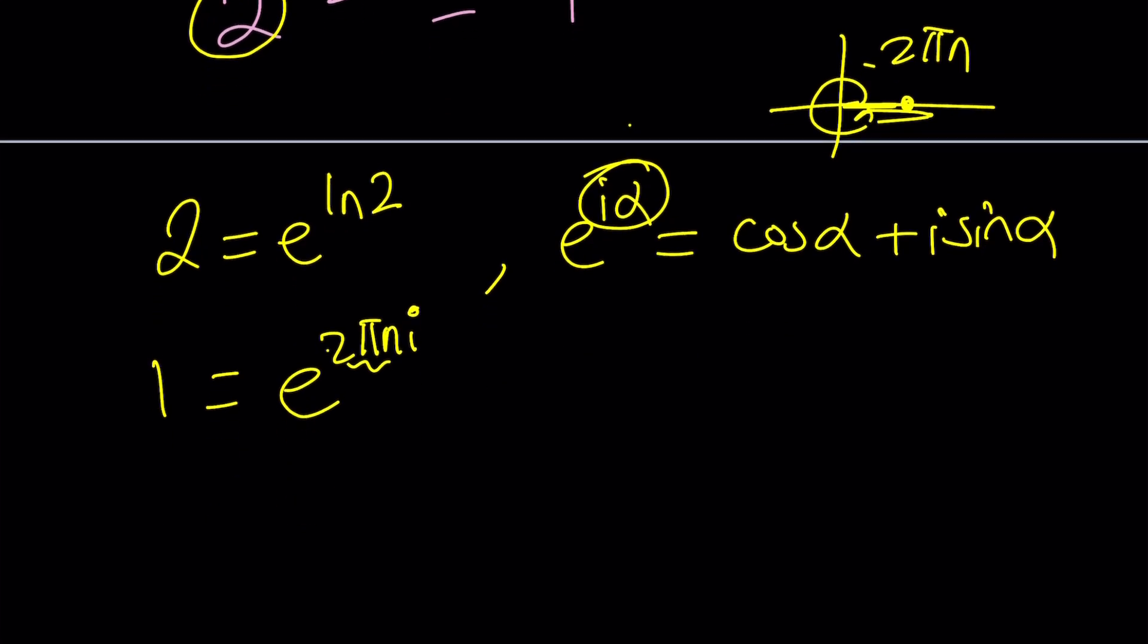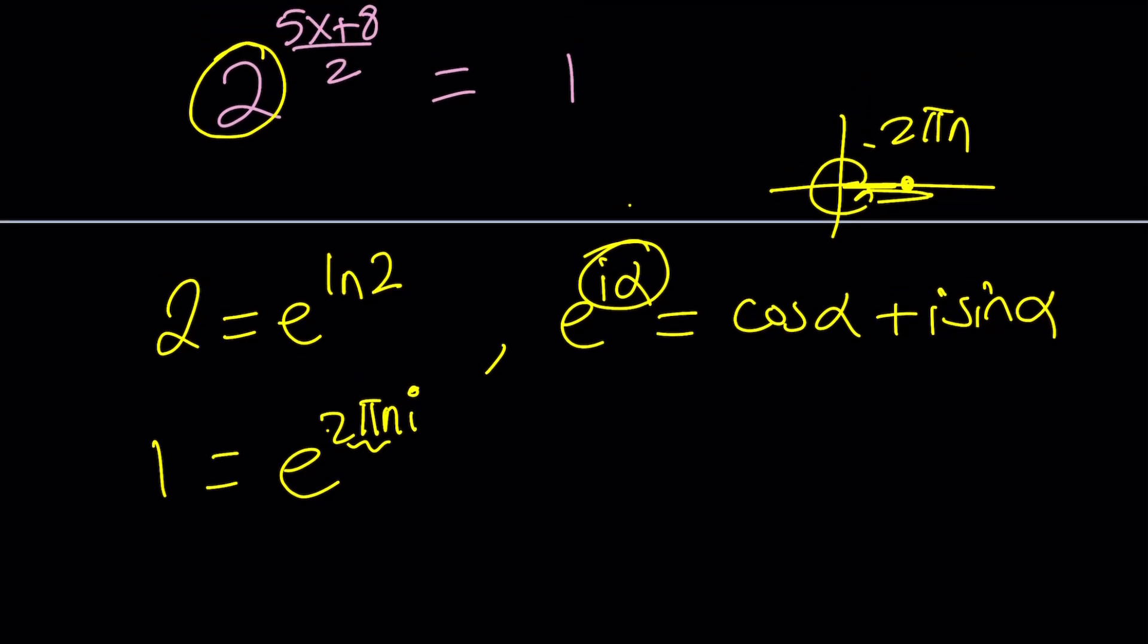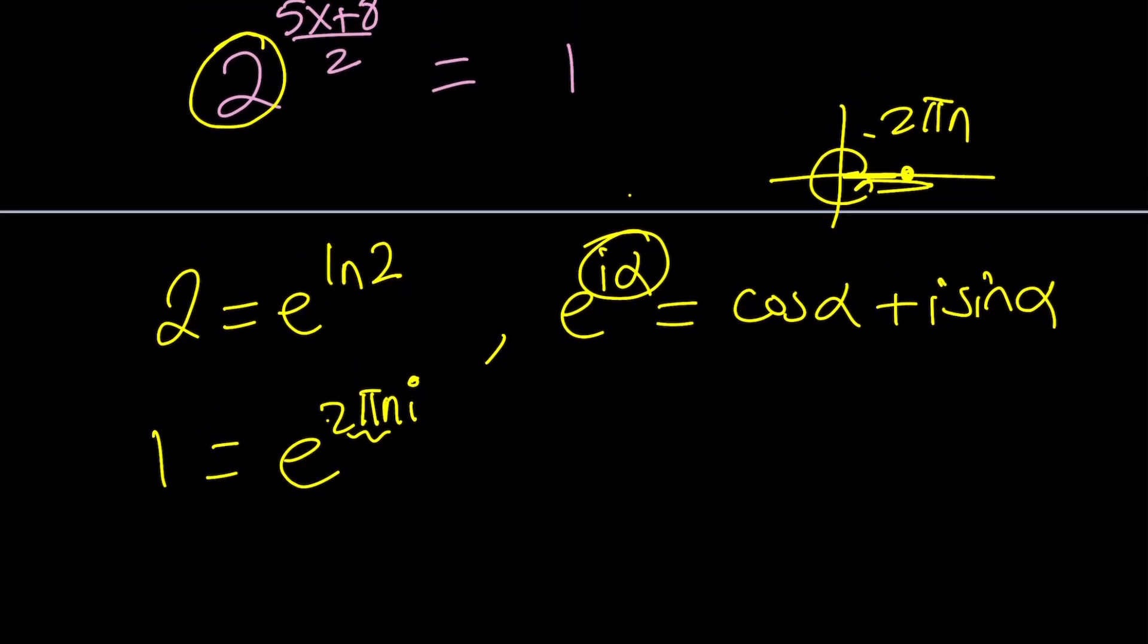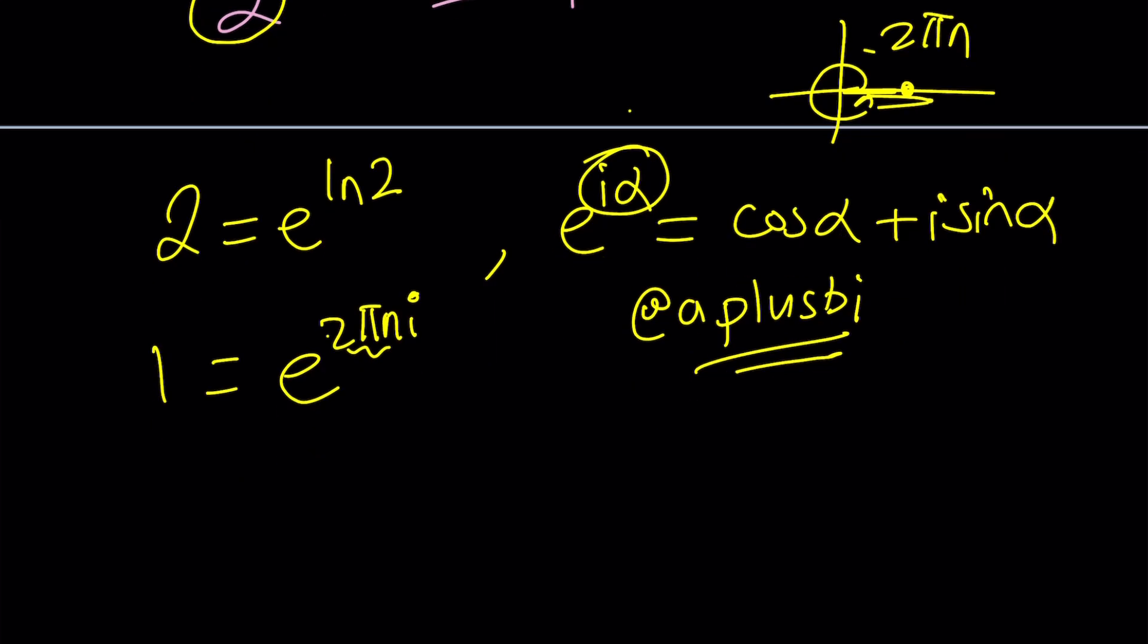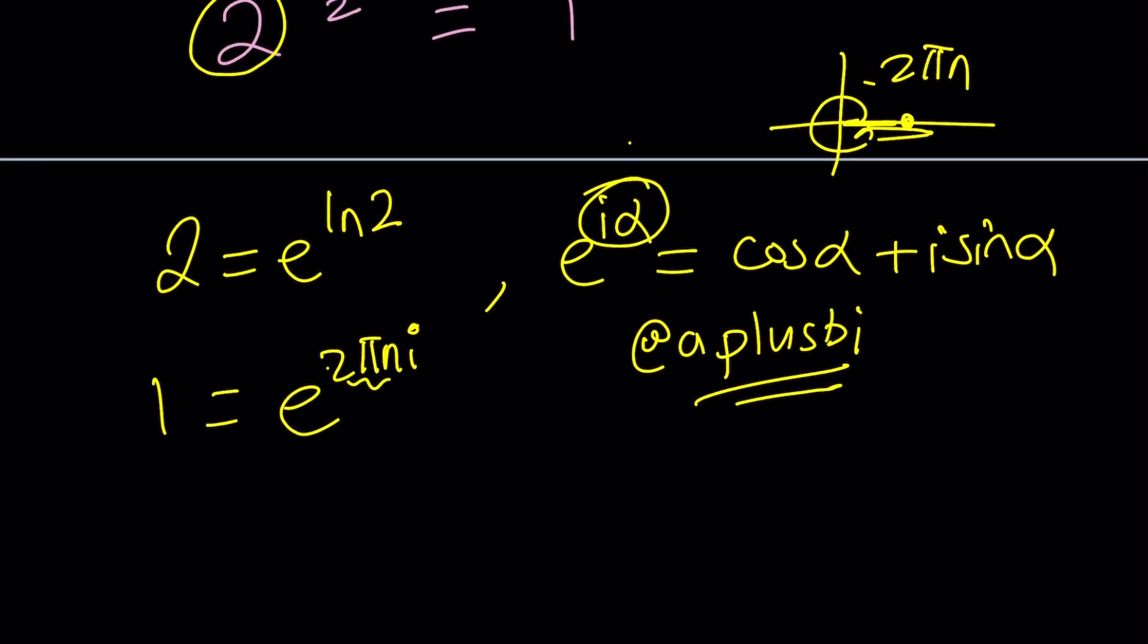So if you're wondering how these formulas are derived or where they come from, you can go ahead and check out the lecture notes on the other channel, which is called a plus bi. Commercial break. Let's get back to work. So now we're going to replace 2 with that, e to the ln 2, raise it to the power 5x plus 8 over 2, and then 1 replace with e to the power 2 pi n i.